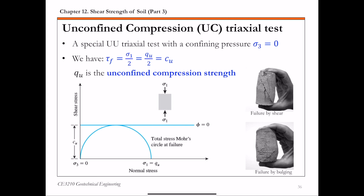The last type of triaxial test is the unconfined compression (UC) triaxial test. This is a special UU triaxial test where the confining pressure sigma 3 is zero — meaning you don't actually apply chamber confining pressure. You just load up the specimen and shear it to failure very quickly. For this UC test, the phi equals zero concept still applies for saturated cohesive soils, so tau f equals Cu, the undrained shear strength. We also define the unconfined compression strength QU, where QU equals 2 times Cu.